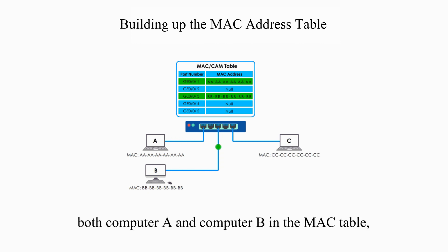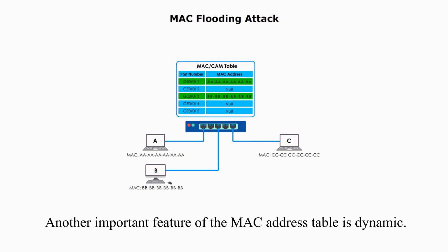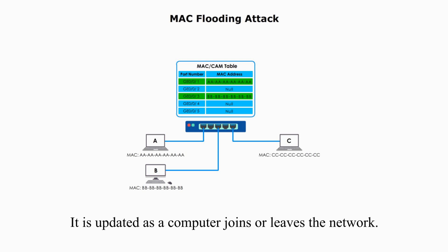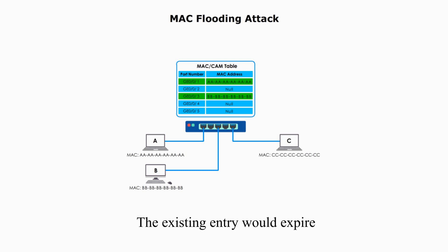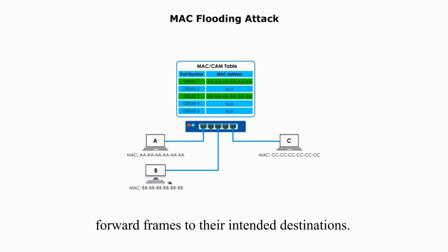Since there are entries for both Computer A and Computer B in the MAC address table, they can talk back and forth with the help of the switch. Another important feature of the MAC address table is that it is dynamic — it is updated as a computer joins or leaves the network. Existing entries expire when idle for a certain time, allowing the switch to efficiently forward frames to their intended destinations.